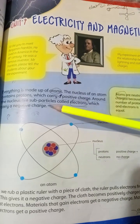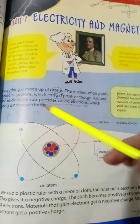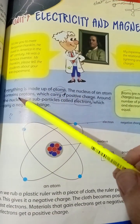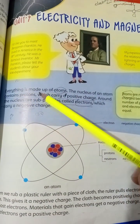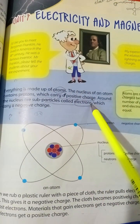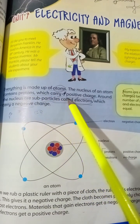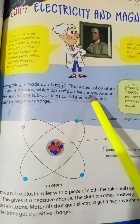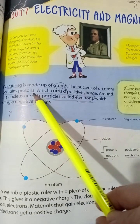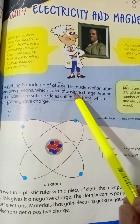Please take out your pencils and underline the important MCQs. The first MCQ is: everything is made up of atoms — underline that. The nucleus of an atom contains protons, which carry a positive charge. The proton is positive.